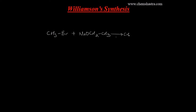This reaction gives you a product which is CH₃OCH₂CH₃ — that is an ether formed in Williamson synthesis. So remember, the reaction involves a simple reaction between alkyl halide and respective sodium alkoxide, and that will give you an ether as a product. NaBr also forms as a byproduct.